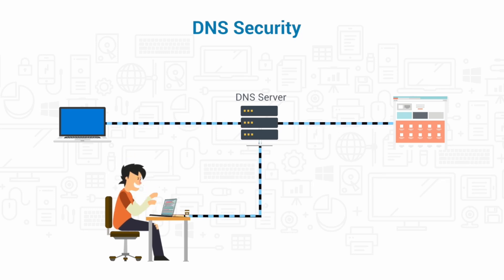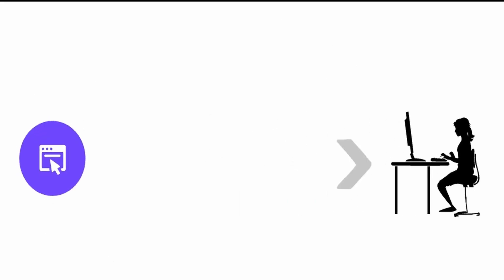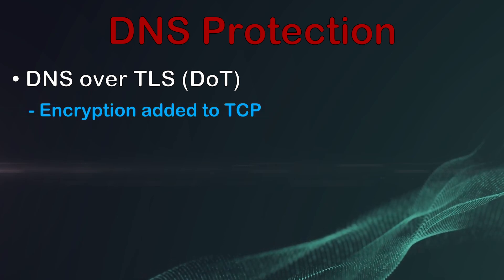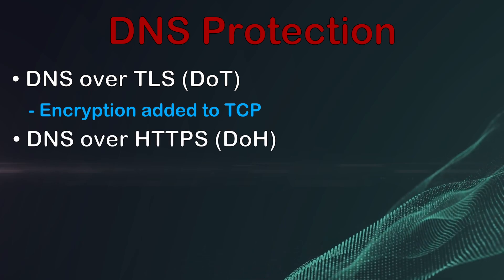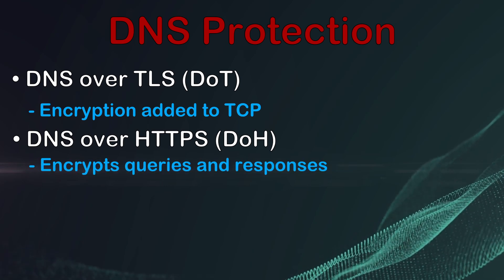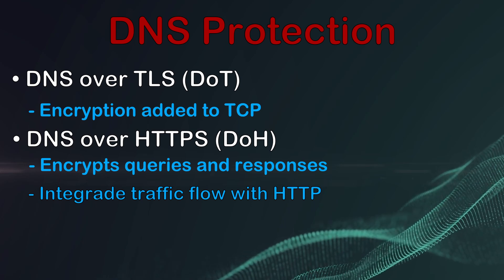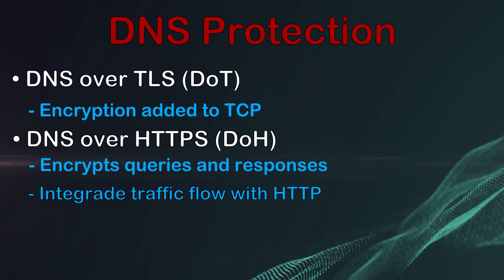When this happens, the server is considered poisoned. Once poisoned, it may direct traffic to the attacker's website, which can be made to look like the site the user was trying to reach originally — so the user is unaware and may share sensitive information. To protect against this risk, you may employ DNS over TLS, or DOT. DOT encrypts DNS queries through the TLS protocol by adding an encryption layer to TCP. An alternate approach is DNS over HTTPS, or DOH. With DOH, both queries and responses are encrypted, with traffic flow integrated with HTTPS traffic instead of UDP, making it difficult for an attacker to single out requests and responses.